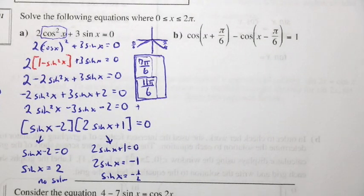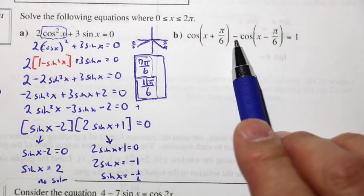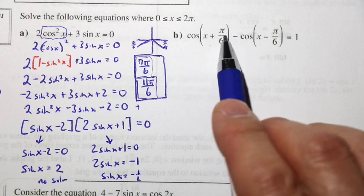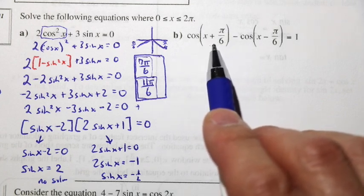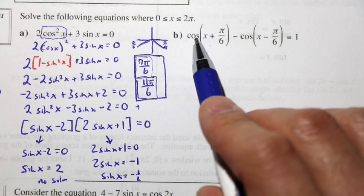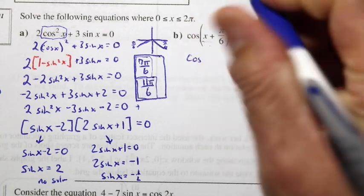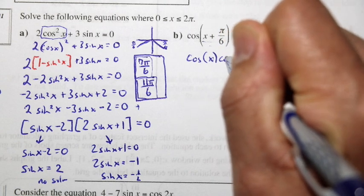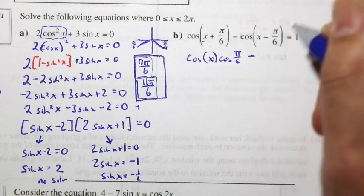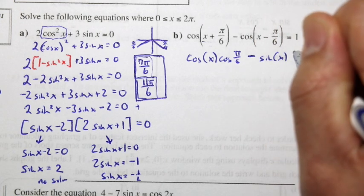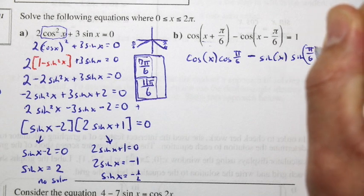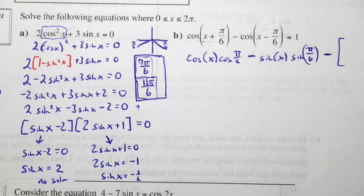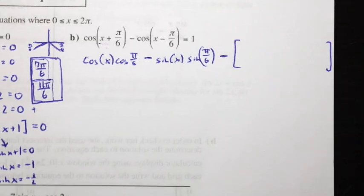In part B, we have cos(x + π/6) - cos(x - π/6) = 1. We have cos of an addition of two angles, so we use the sum angle formula for cosine: cos(A + B) = cos A cos B - sin A sin B.